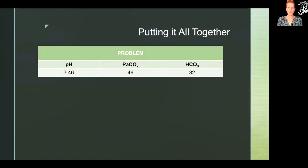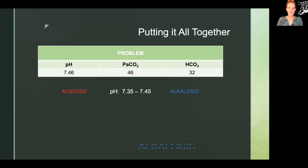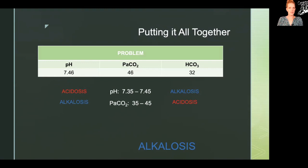Let's do one other problem. Starting again with pH, we see that it's 7.46, which falls outside of our normal range — it's a little bit high, so we're trending toward alkalosis. When we look at our partial pressure of carbon dioxide, we see that it's 46, which is a little bit too high, and that one is trending toward acidosis. Finally, our bicarbonate is also a little bit too high, and in that case it's trending toward alkalosis.